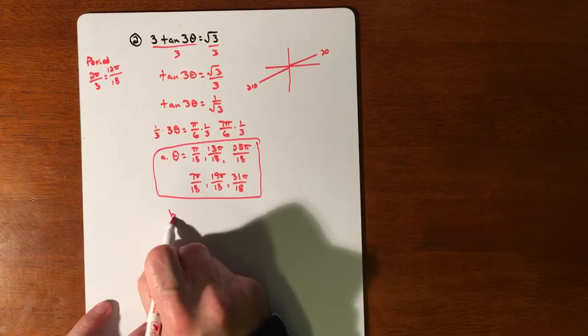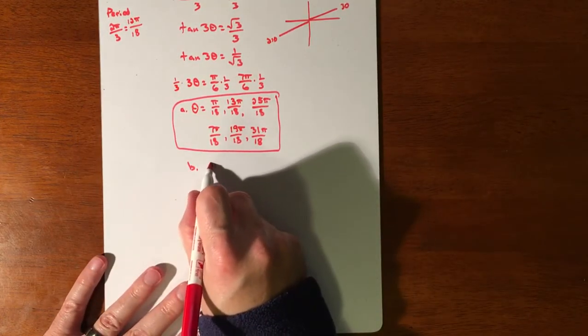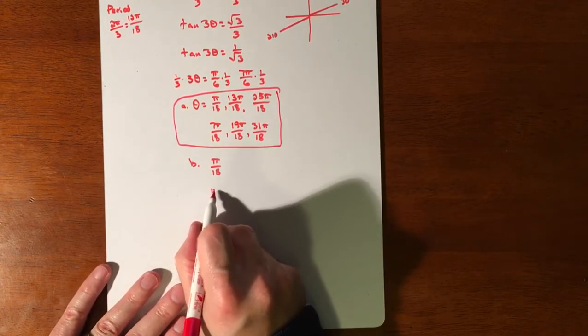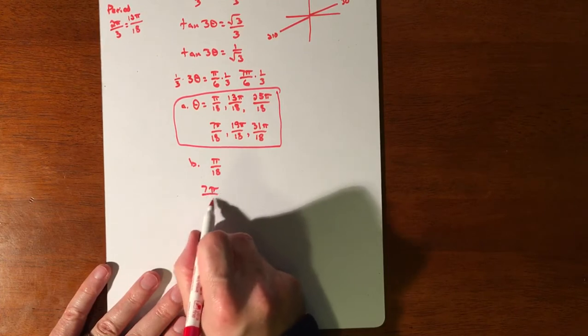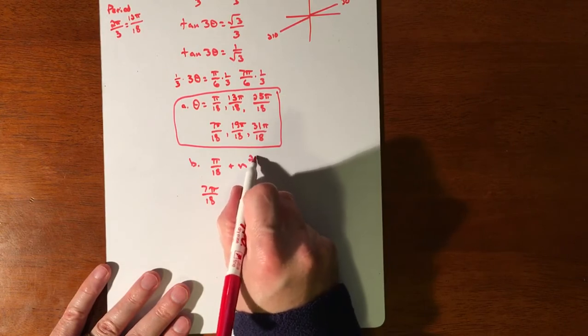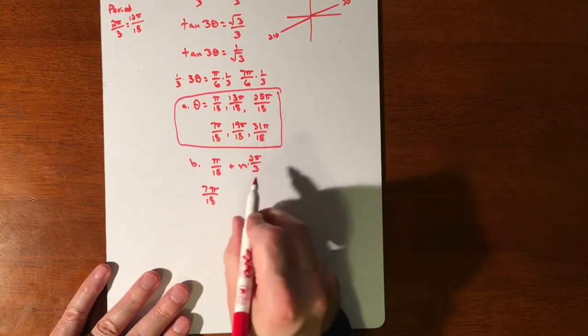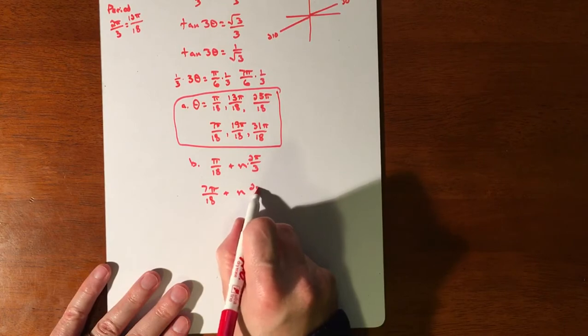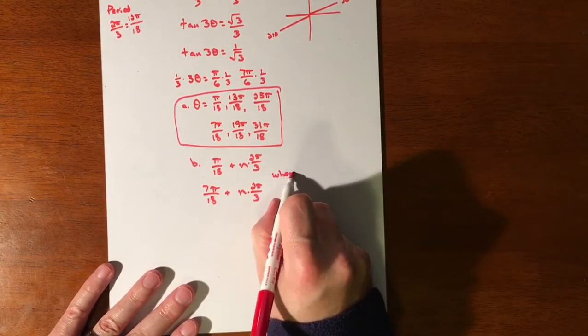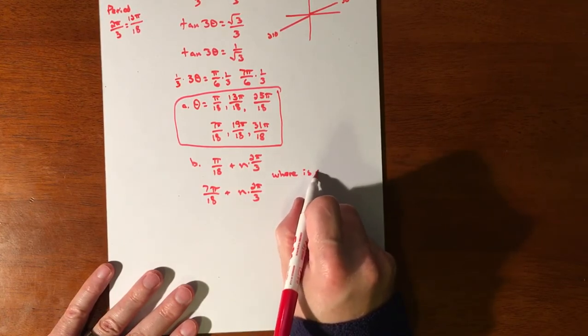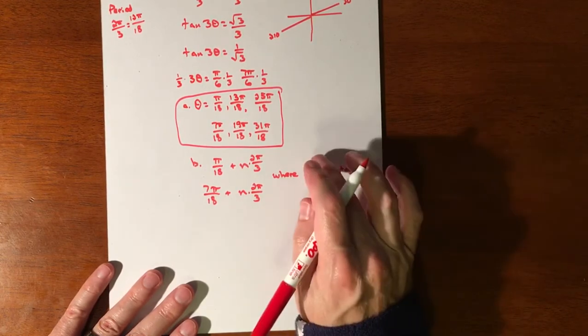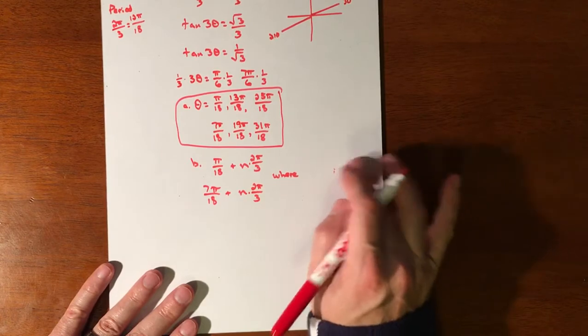So if you're just doing the infinite amount of solutions, actually it's going to be, I think, less work because you write your originals and you just add n·2π/3s. And you just add n·2π/3s.